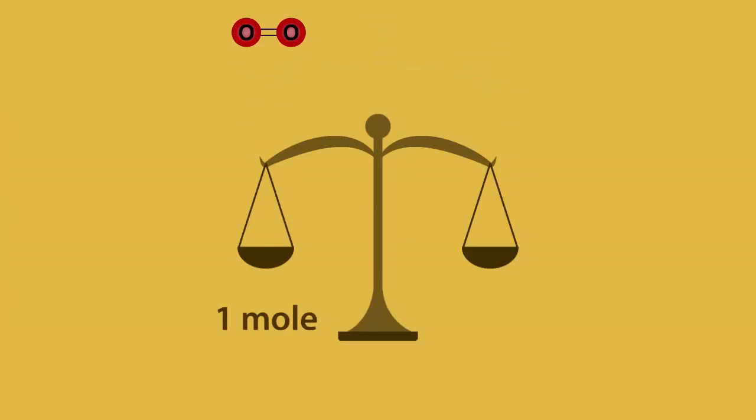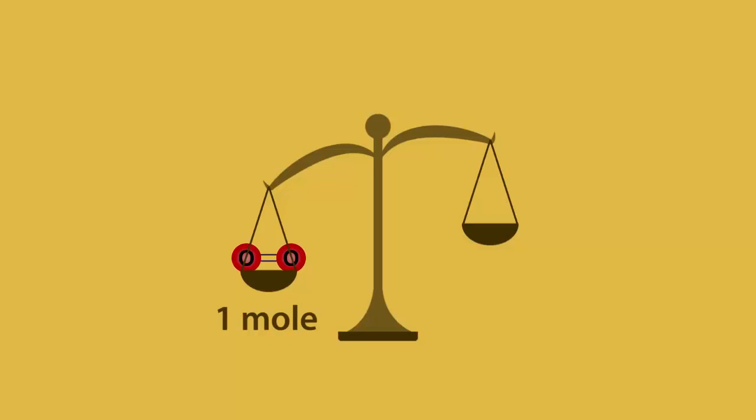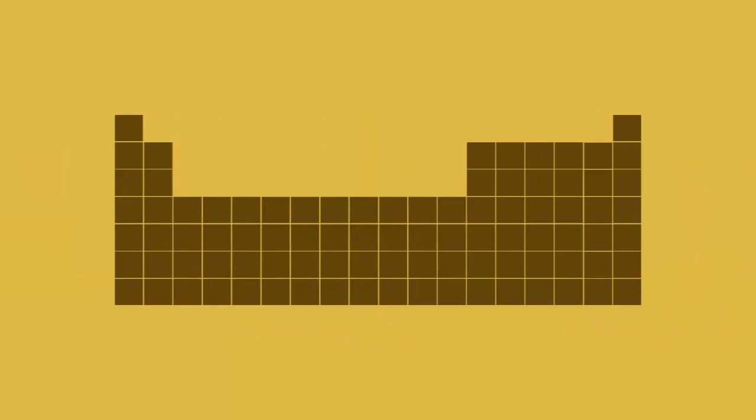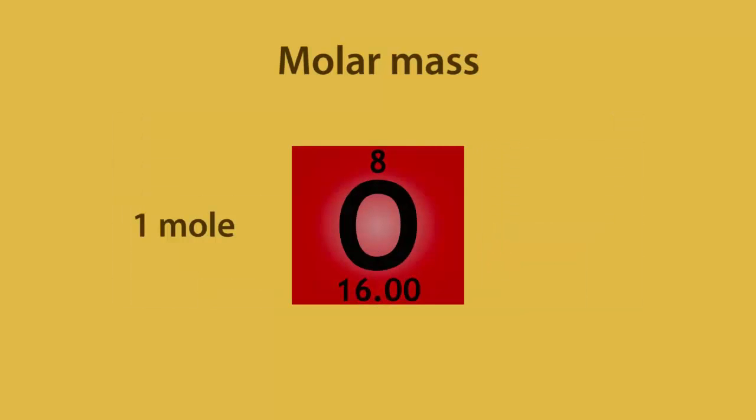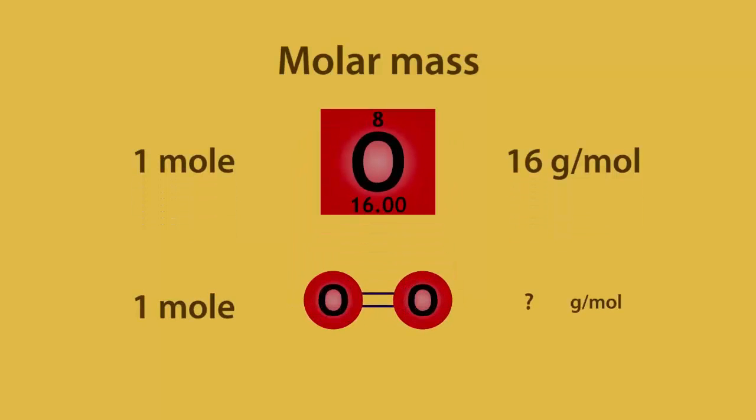The mass of 1 mole of oxygen molecules, O2, can be found using the periodic table. This is called the molar mass. If 1 mole of oxygen atoms have an atomic mass of 16 grams per mole, what's the mass of 1 mole of oxygen molecules? Pause and continue when ready.